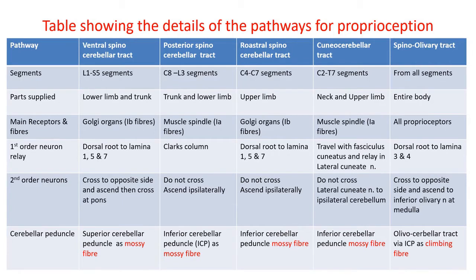In the case of the posterior spinocerebellar tract, C8 to L3 segments are involved, covering all the proprioceptive inputs for the trunk and lower limb. Predominantly muscle spindle, group 1A fibers, relay in Clarke's column. They do not cross and ascend ipsilaterally as the posterior spinocerebellar tract, reaching the medulla through the inferior cerebellar peduncle, and reach the spinocerebellum as mossy fibers.